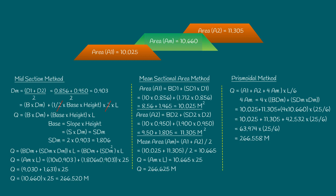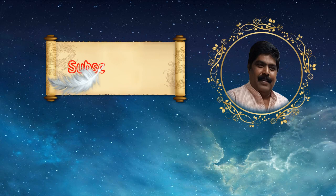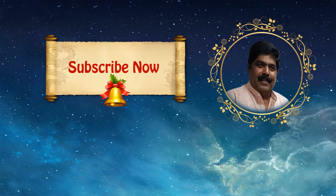Let us compare the values of these three methods. The midsection method gives the lower value. The mean sectional area method gives the higher value. The prismoidal method gives a value in the middle of these two methods, which is fair on both the contractors and the client. So the prismoidal method is most commonly adopted in the engineering field. If you like these videos, please subscribe, share with your friends, and don't forget to press the bell button. Thank you.